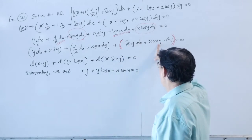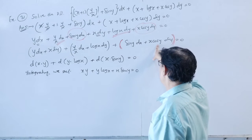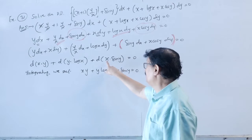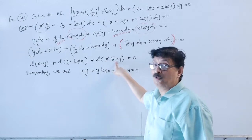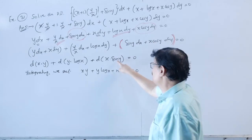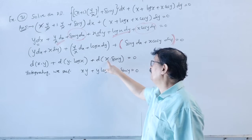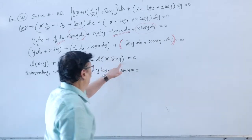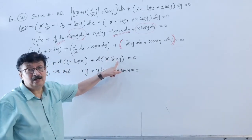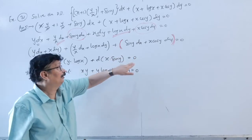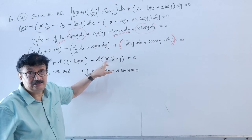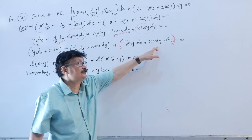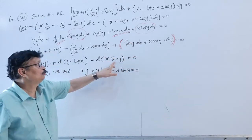Finally, group sin(y)·dx and x·cos(y)·dy together. Since d(x·sin(y)) = x·cos(y)·dy + sin(y)·dx by the product rule, this bracket is d(x·sin(y)). So we have d(xy) + d(y·log x) + d(x·sin y) = 0.